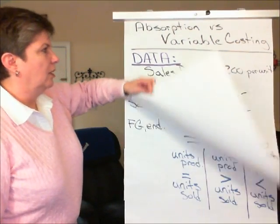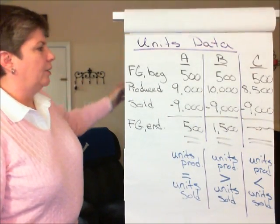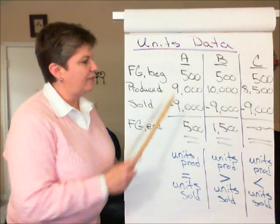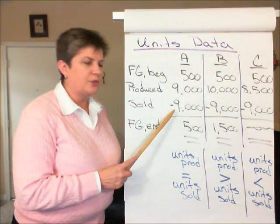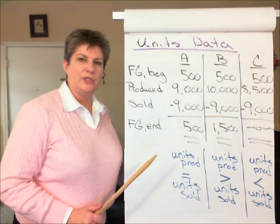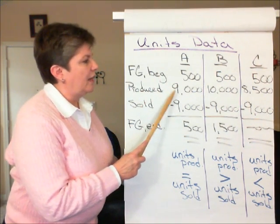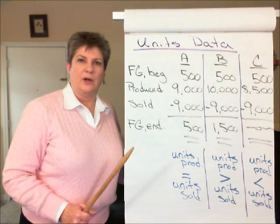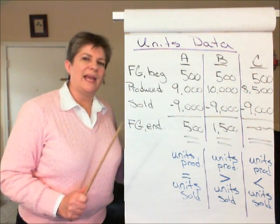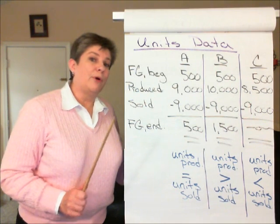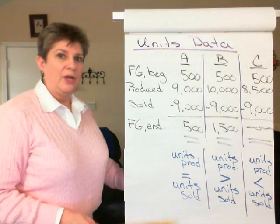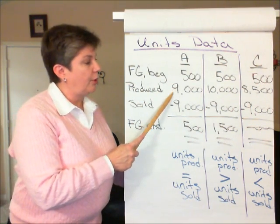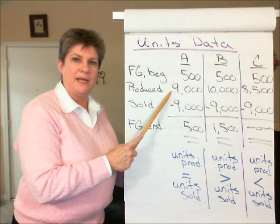Recall from our data scenario that in Scenario A, we produced 9,000 units and also sold 9,000 units during the period. The units produced is the number we're going to focus on, because in order to calculate product cost per unit, we need to calculate the fixed overhead on a per unit produced basis.